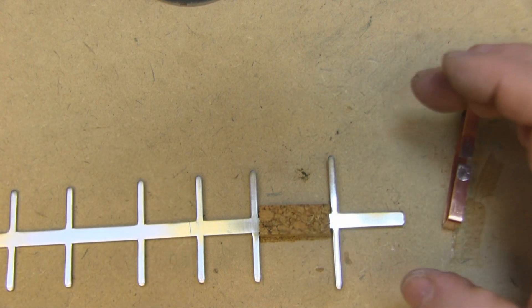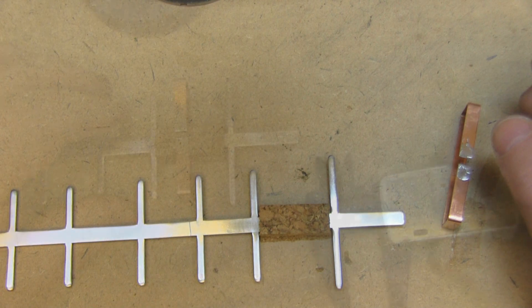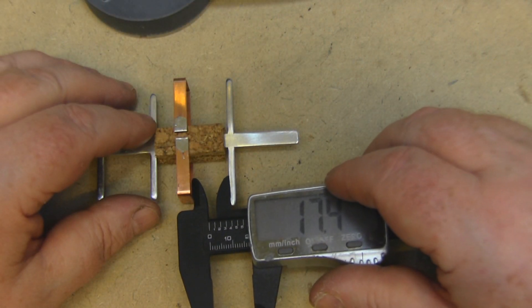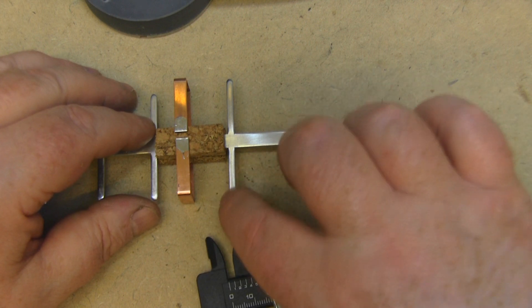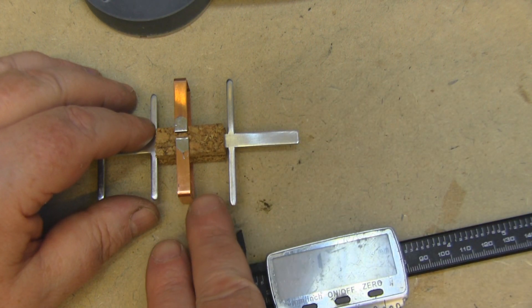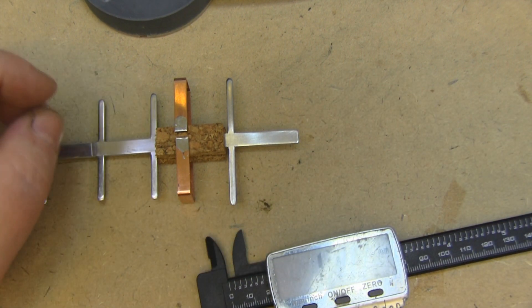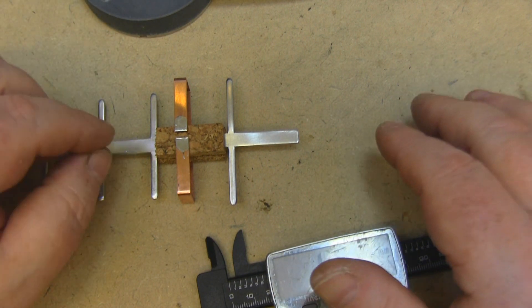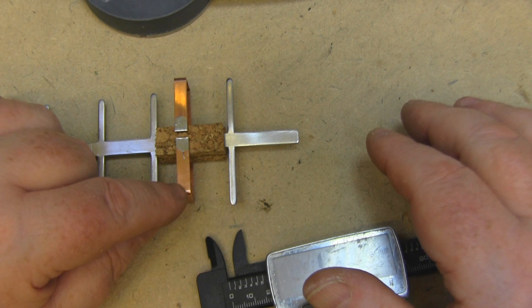Now the main driven element wants to be 17.5 millimeters away from the edge of this back reflector, so we're measuring edge to edge. The measurements that I've included down in the description, the PDF, is taking into account the thickness of this main driven element, so you want to stick to the measurements that I've laid out in that PDF.